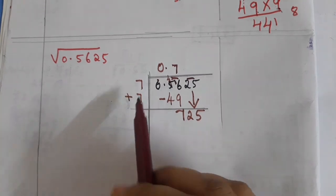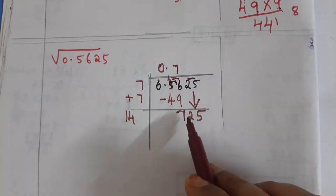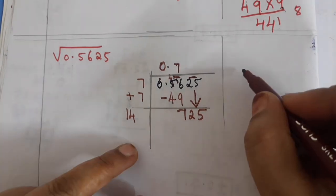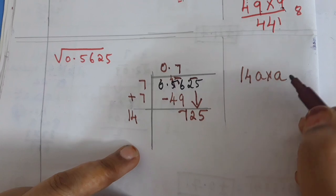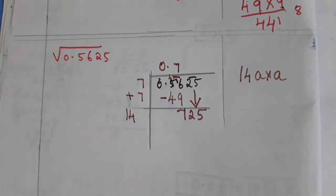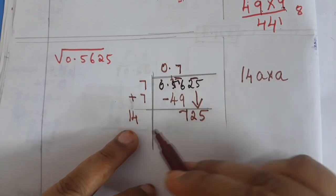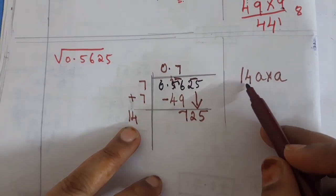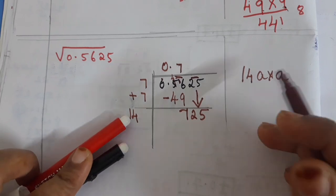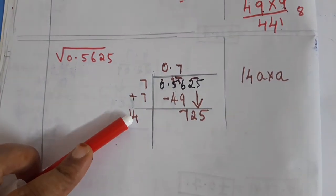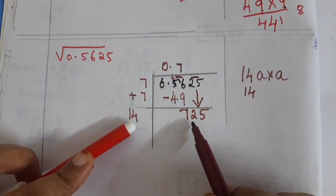Same number repeated: 7 plus 7 is 14. Now with 14, any guessing number multiplied with that same guessing number — after multiplication we have to get 725.